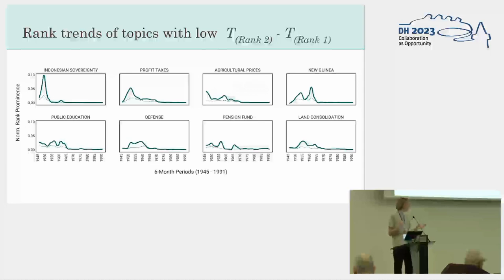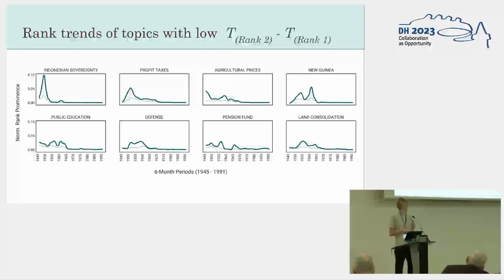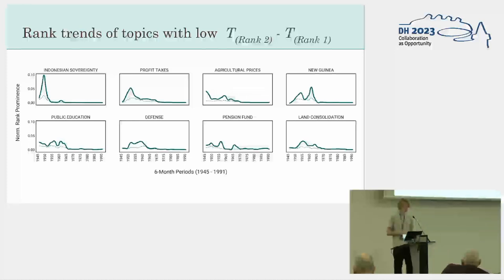So if you sort the topics, those with a low rank two minus rank one are topics that are very topical at a given moment. For example, there's a topic about Indonesian sovereignty — there was a big debate about that after the war — and when that topic appears later in a speech, it's at a time when it is often ranked first. These are often the hotly debated political topics.